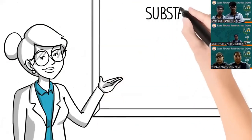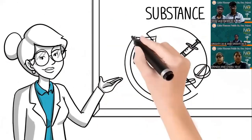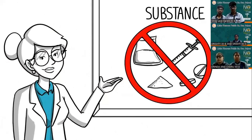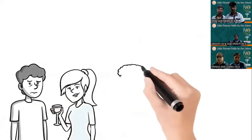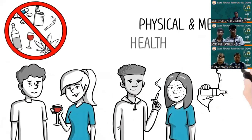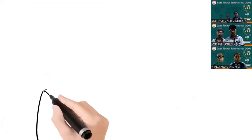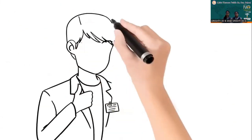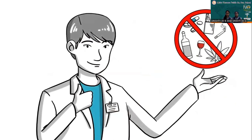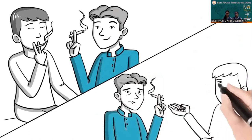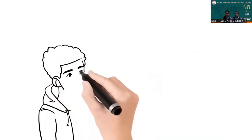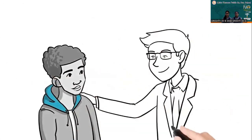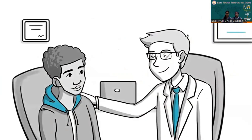A danger in using any substance that isn't prescribed to you is not knowing exactly what it is you're taking and how it will impact you. Unfortunately, young people are being exposed to substances that can have dangerous physical and mental health consequences. As a good rule of thumb, if a drug isn't prescribed to you, you shouldn't take it. Quite quickly, what feels like casual or experimental substance use can turn into a substance use problem with long-lasting and negative consequences. Before you decide to use a substance, know the risks and potential consequences, or reach out to a counselor to talk about it.